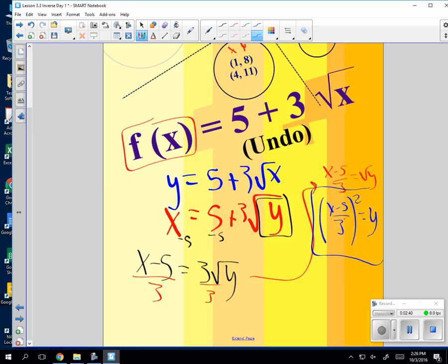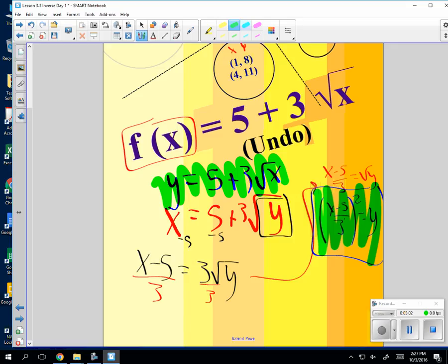Well, that seems like a total waste of time, doesn't it? Switching those x and y and then solving for y. Except look at what you see here between these two functions. Notice what you see about plus 5 looks like minus 5 here. Times 3 looks like divide by 3. Square root looks like squared here. So what do you notice about the functions in an inverse? They're the total undoing of each other. So inverses undo each other.